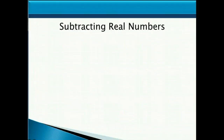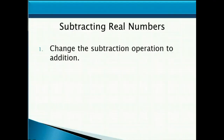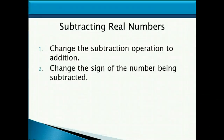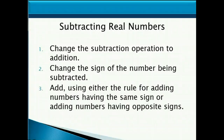So subtracting real numbers boils down to these steps. The first thing you want to do is change the subtraction operation to addition. Then change the sign of the number being subtracted. And lastly, add using either the rule for adding numbers having the same sign or adding numbers having opposite signs.